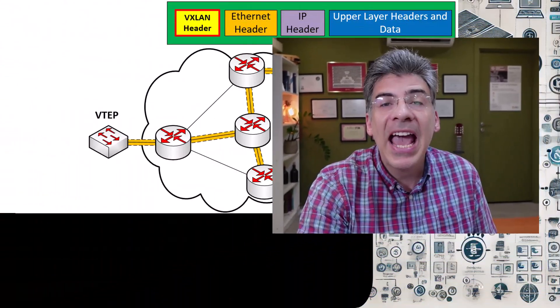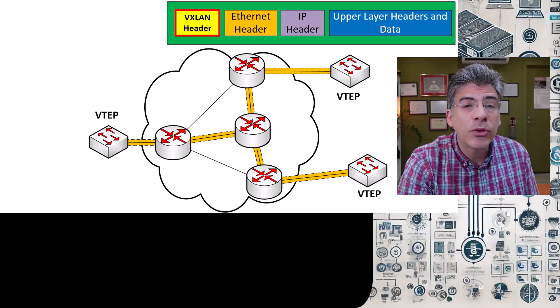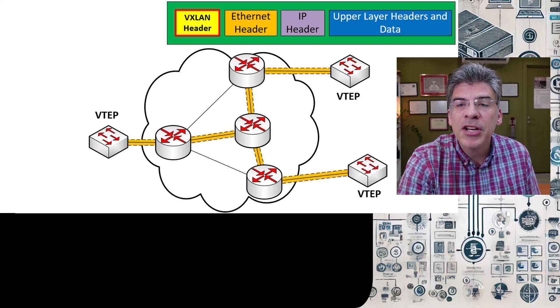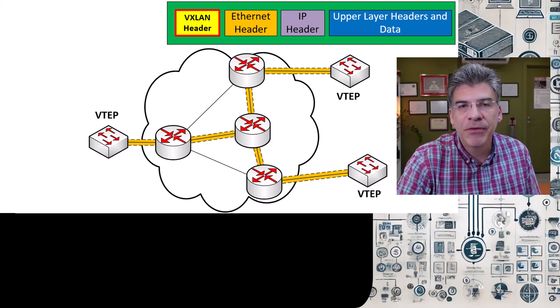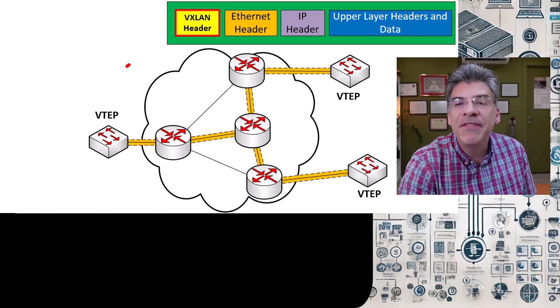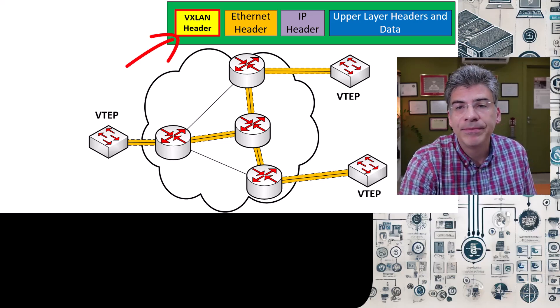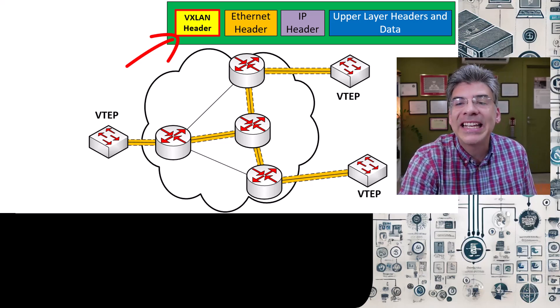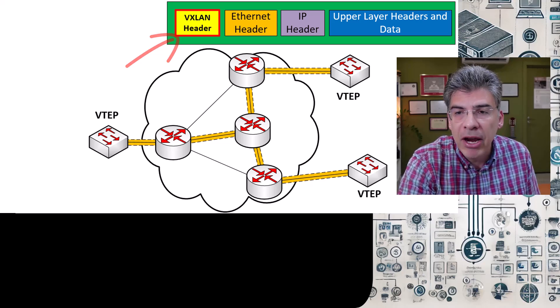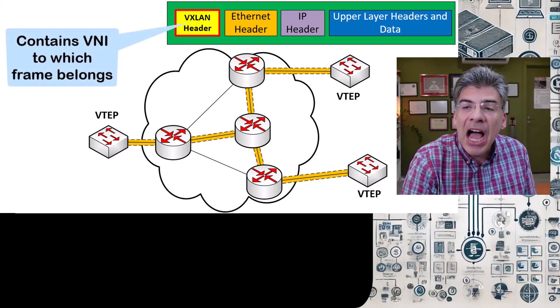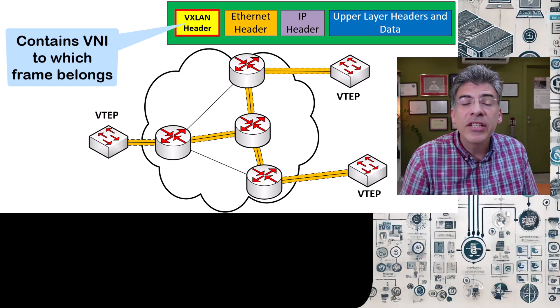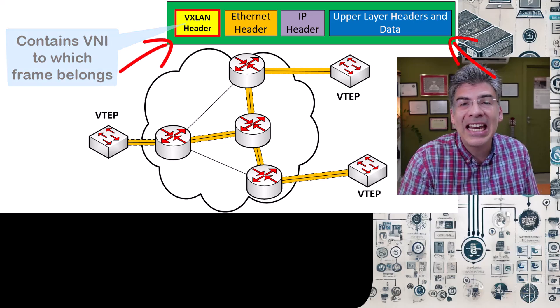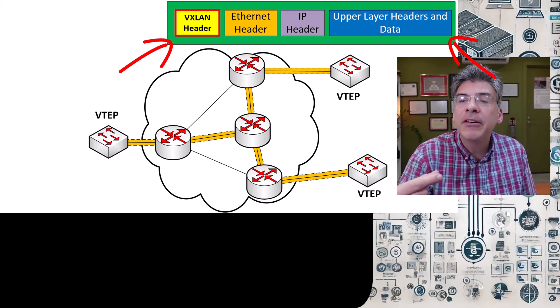Today, we'll be looking into the VXLAN header and the encapsulation process that takes place when layer two segments are spanned across a VXLAN infrastructure. Let's take a look at the VXLAN header once again. This header is appended to the conventional Ethernet header before it is encapsulated into a UDP datagram, and it contains the VNI to which that frame belongs. This whole section here, indicated by this green box, is the encapsulated frame along with the VXLAN header.